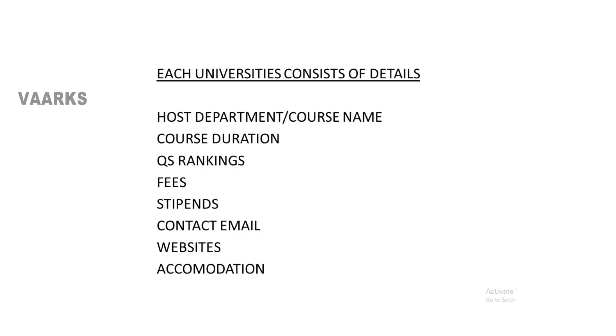The next section covers the details of the university's contents. It has different sections called the host department or course name. Most of the times the host department varies for civil engineering — sometimes it may be within another engineering section, so it varies from one university to another. I have also included the course duration. The course duration is a bit higher for US and Canadian universities compared to UK and Australian universities.